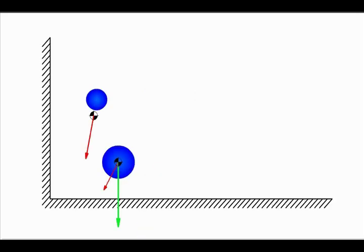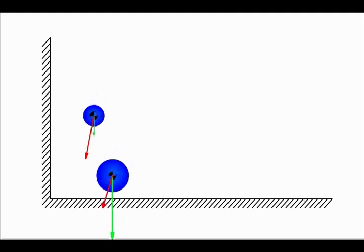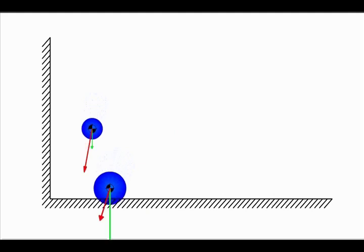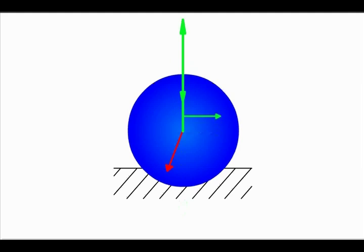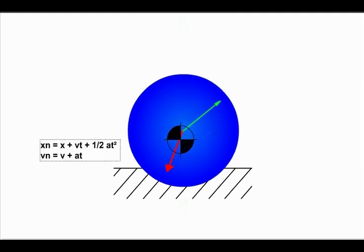This process is repeated for every particle in the system for each time step. When particles collide with each other or with other parts of the system, the particles are treated like linear springs to calculate a reaction force and friction. The length of the time step is the result of a calculation performed to assure that particle-particle contacts are accurately simulated.